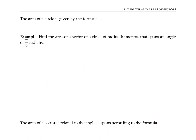The area of a circle is given by the formula pi r squared, where r is the radius. Let's use that fact to find the area of the sector of a circle of radius 10 meters that spans an angle of pi over six radians.